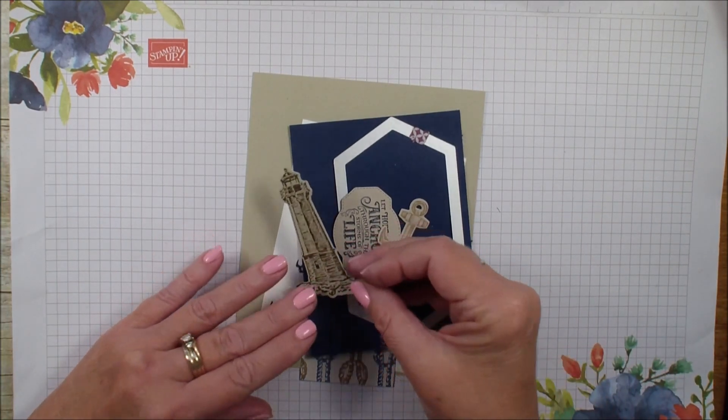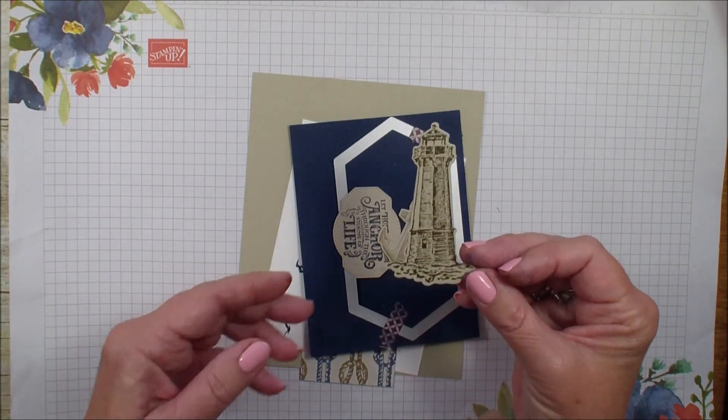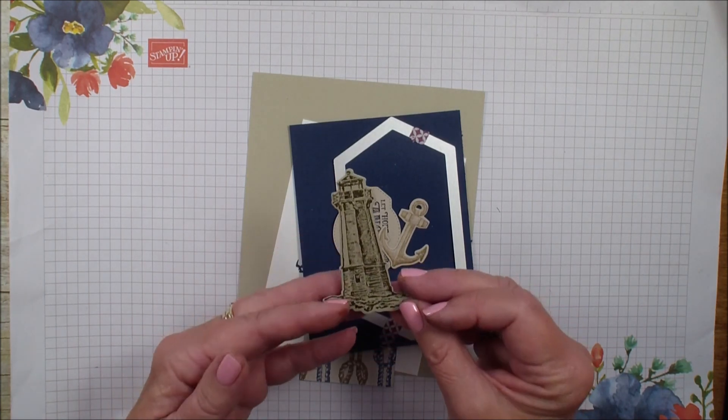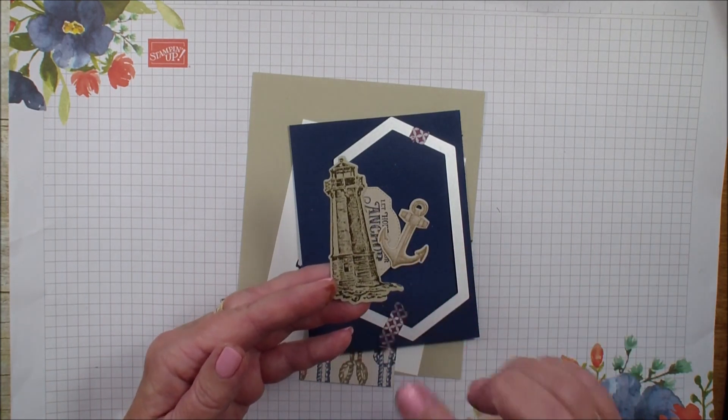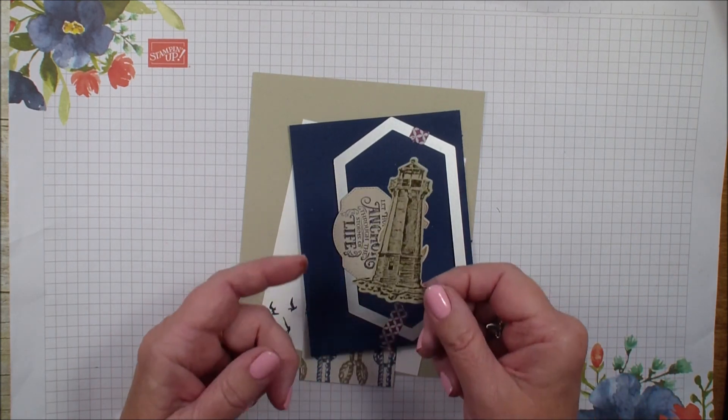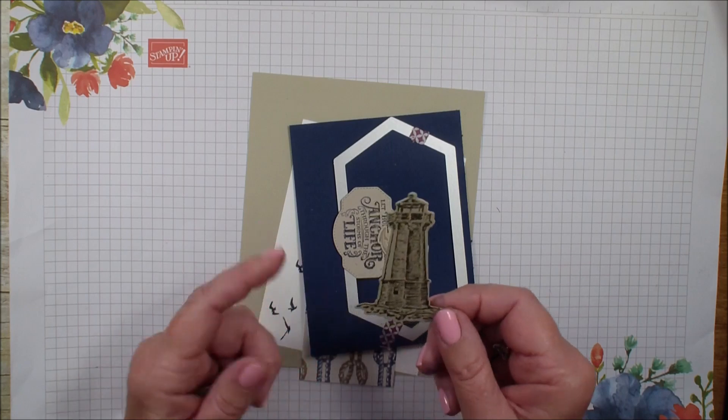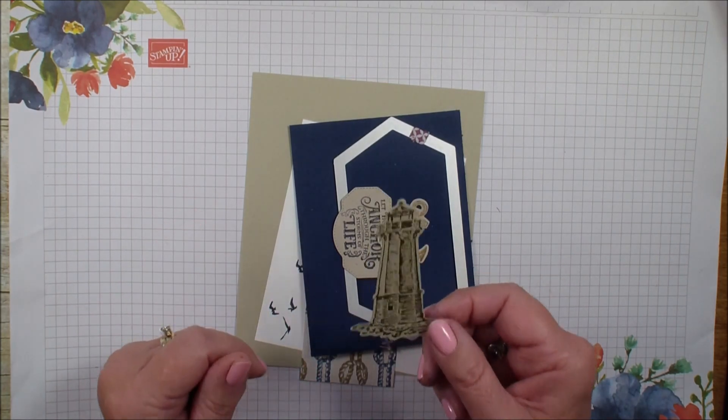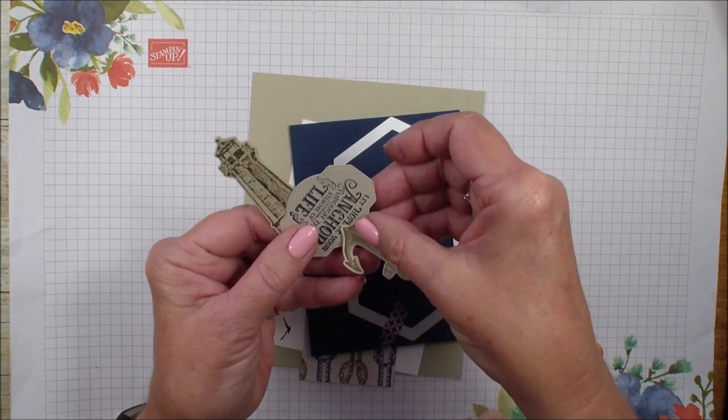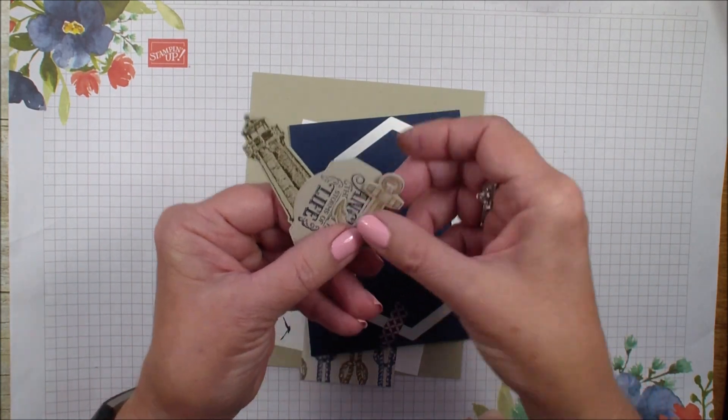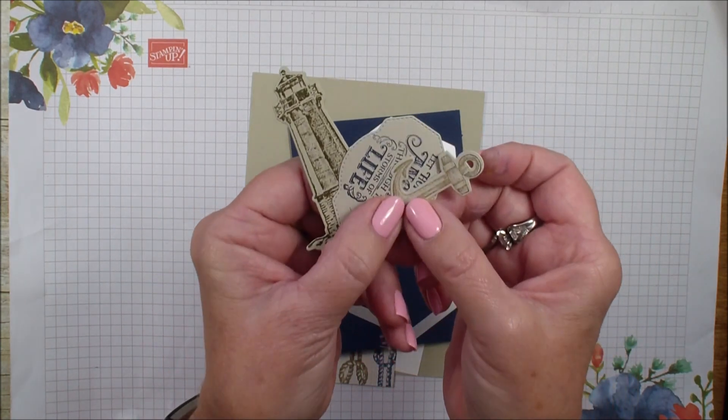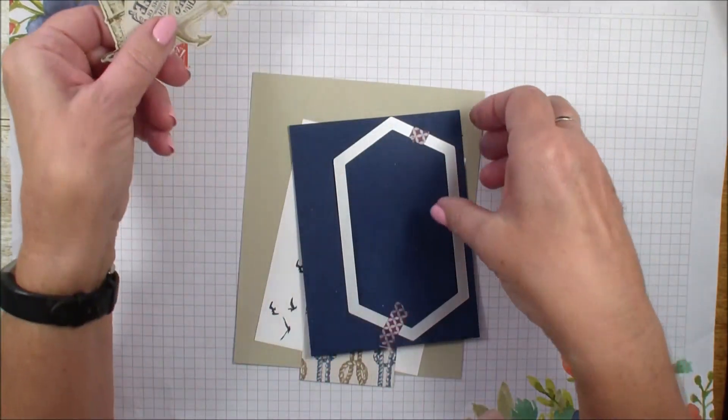If you joined me yesterday, I shared a quick tip on how to use the Stamparatus and your dies. If you missed that video, head over to the link below to my blog and you can see the quick little template I make when I have die cuts. So I have already taken my die cuts from the Sailing Home bundle and have stamped them already. And now I'm going to be using them on my Creative Fold today.